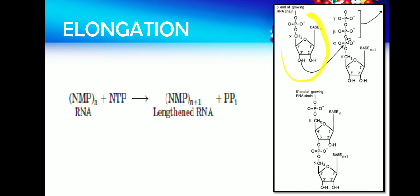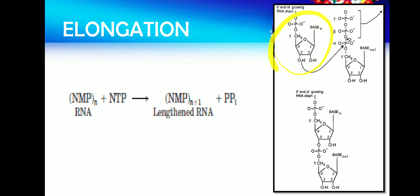This OH group is already there on the RNA — on the nucleotide already on the RNA, at the five prime end of the growing chain. This nucleotide has a three prime OH group which acts as a nucleophile, and it attacks the alpha phosphate of the incoming nucleotide. This alpha phosphate is the phosphate bound to the ribosugar. The nucleotide always has three phosphates: alpha, beta, and gamma phosphate.